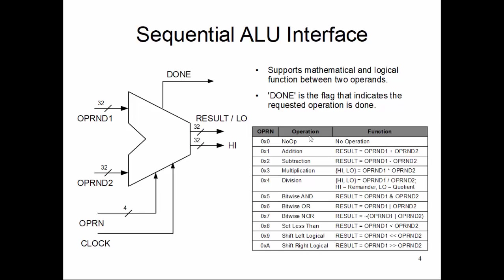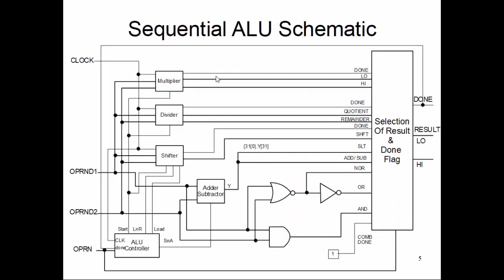The 4-bit operation code maps as follows: 0 is no-operation, then addition, subtraction, multiplication, division, AND, OR, NOT, less-than, shift-left-logical, shift-right-logical — packing 10 different functions. Since this is a sequential circuit there is also a reset input (assumed but not shown in the schematic), and a 'done' signal that the ALU sends out after a specified number of clock cycles when an operation completes.